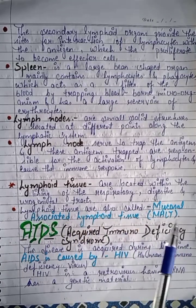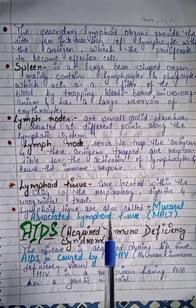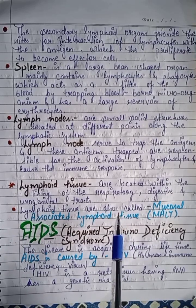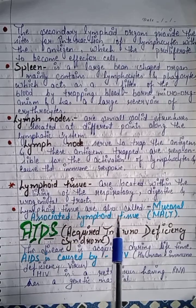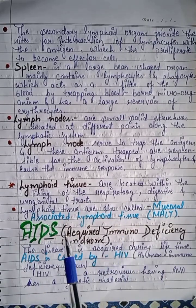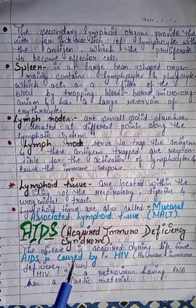Lymphoid tissue is located within the lining of the respiratory, digestive, and urogenital tracts. Lymphocytes in these tissues are also called mucosal-associated lymphoid tissue, abbreviated as MALT.